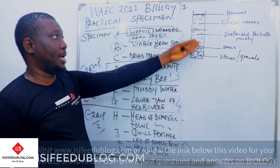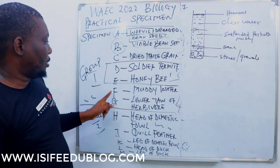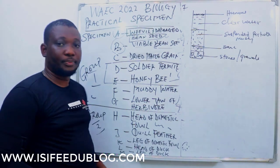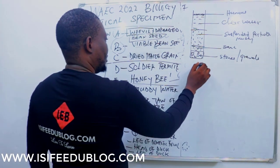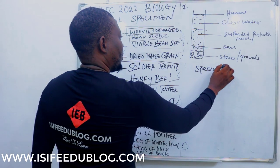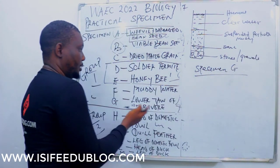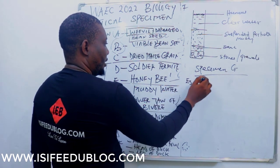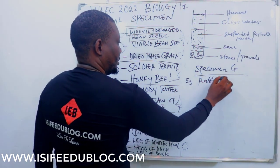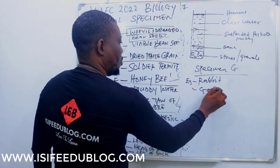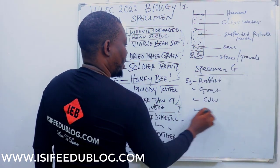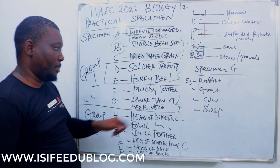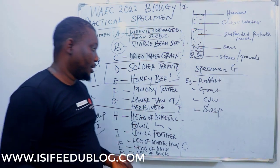That is specimen F. You may be asked to draw and label each of these segments of specimen F. Specimen G is a lower jaw of a herbivore. Examples of herbivores include rabbits, goat, cow, and sheep.